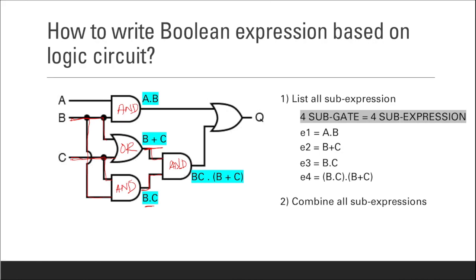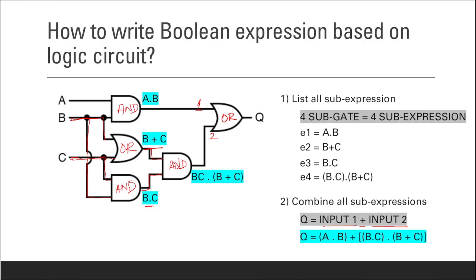Now combining all sub-expressions for the final output gate, which is an OR gate, Q equals input one plus input two. This gives Q equals A dot B plus B dot C dot B dot (B plus C).